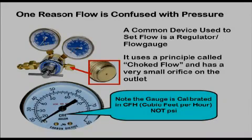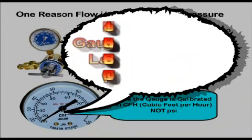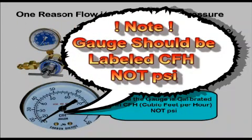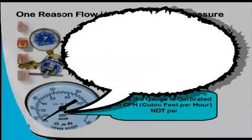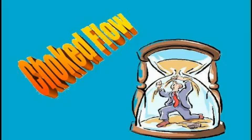One cause of confusion is a common flow control device used on cylinders called a regulator flow gauge, which sets pressure above a very small orifice to establish the flow rate in cubic feet per hour. Note the output gauge is calibrated in CFH, not pressure PSI.